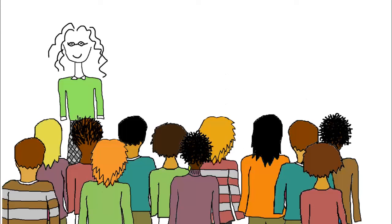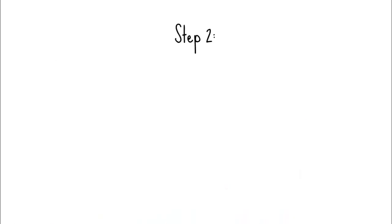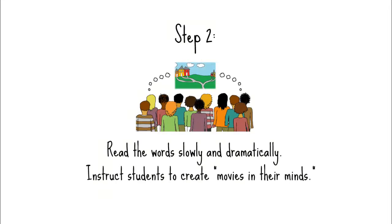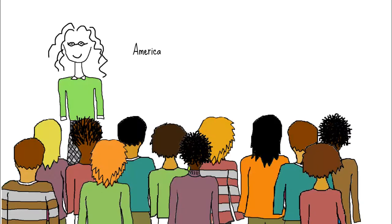Now, before starting the lesson, explain to students that they are going to read a woman's story about her family's move from Italy to the U.S., so they have some context to build on. Next, read the words slowly and dramatically. Instruct students to create movies in their minds of what they think will happen in the text. As each new word is read, students should try to incorporate it into their mental picture.